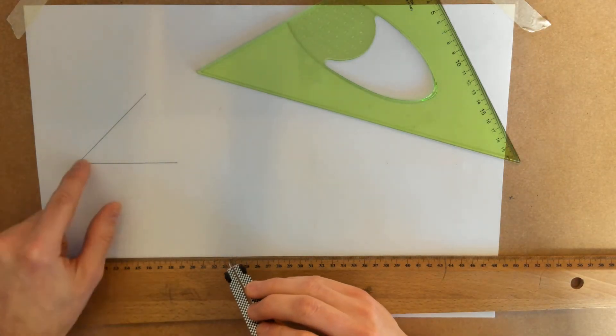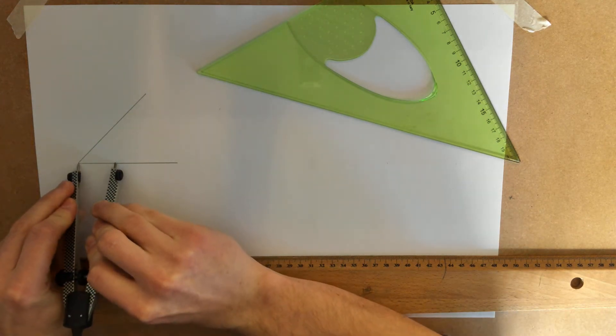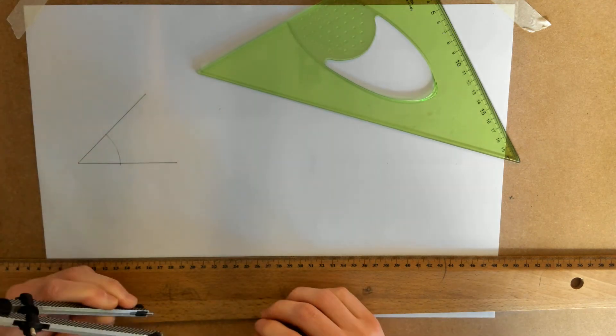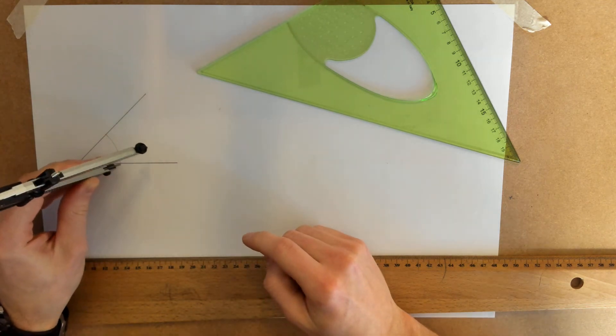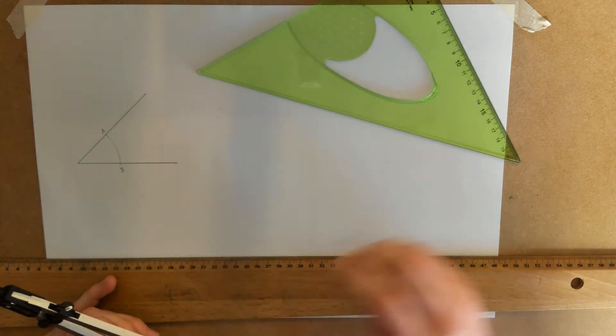Whatever angle we're given, we're going to take our compass, open it up to any distance at all, and create a little arc. Where the arc crosses both of these lines, we're going to use them as two reference points: point A and point B.